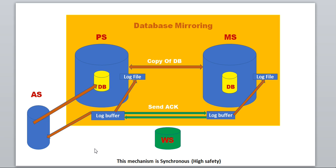I have designed a pretty good diagram to help with the understanding of the database mirroring internal mechanism. As we all know, in database mirroring we have a principal server and a mirror server, where we have a principal database and a mirror database. The mirror database is an exact copy of the principal database.